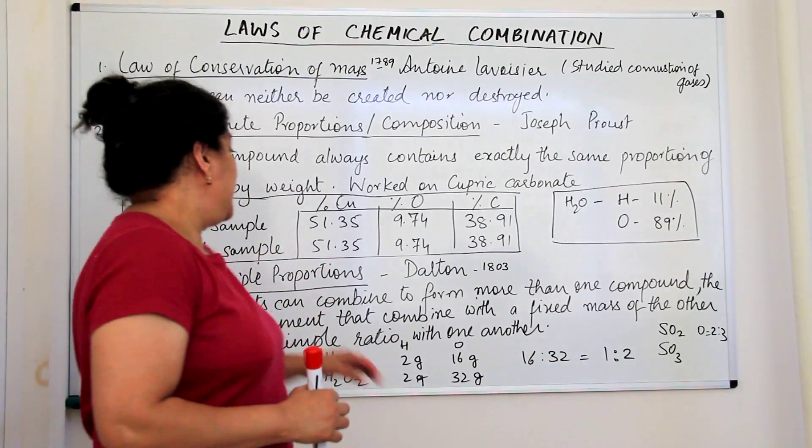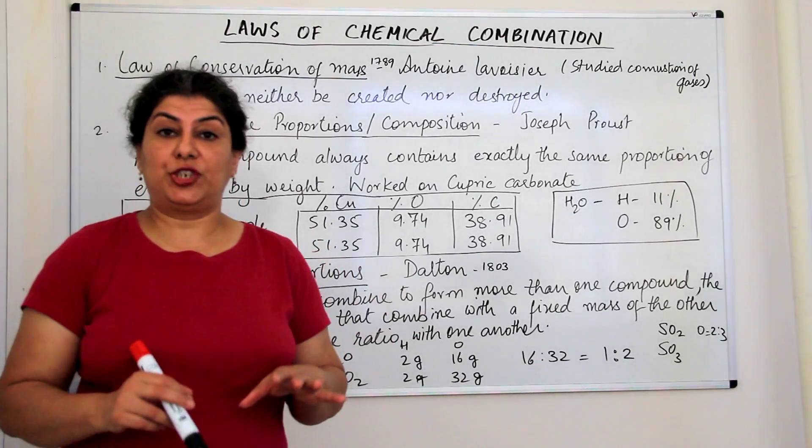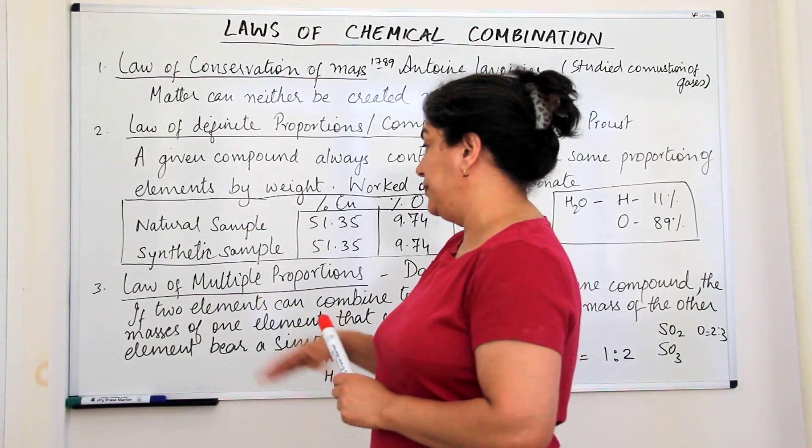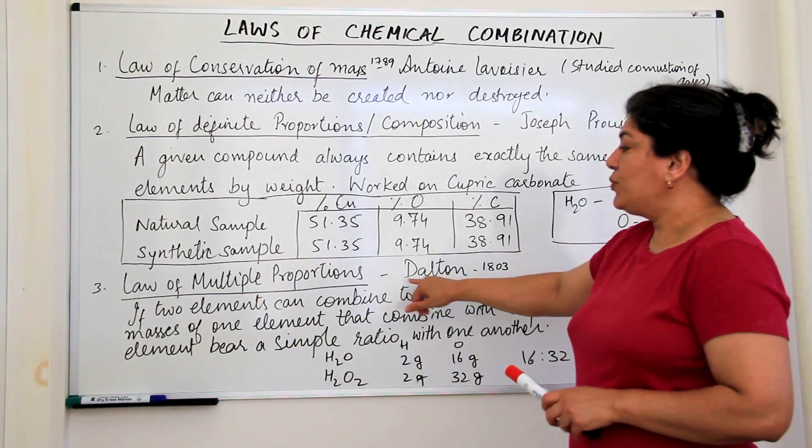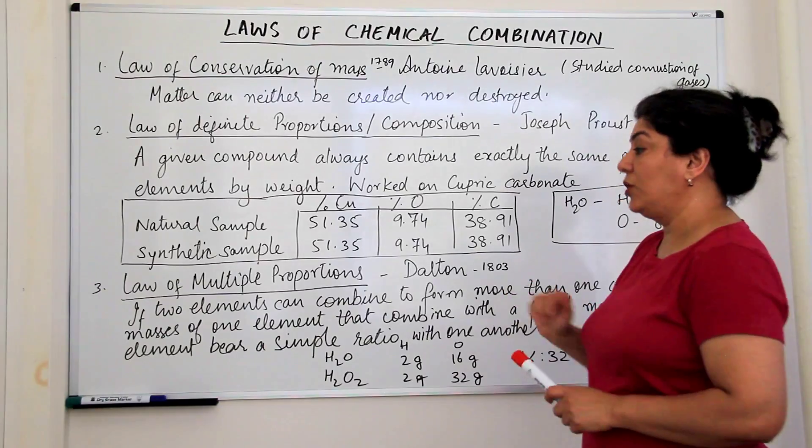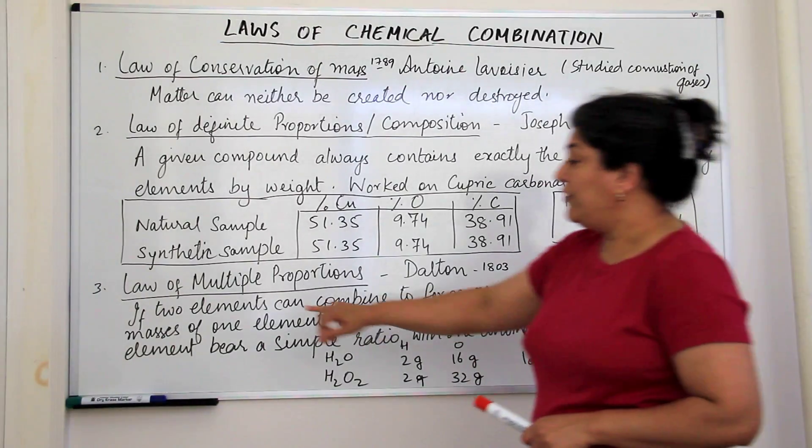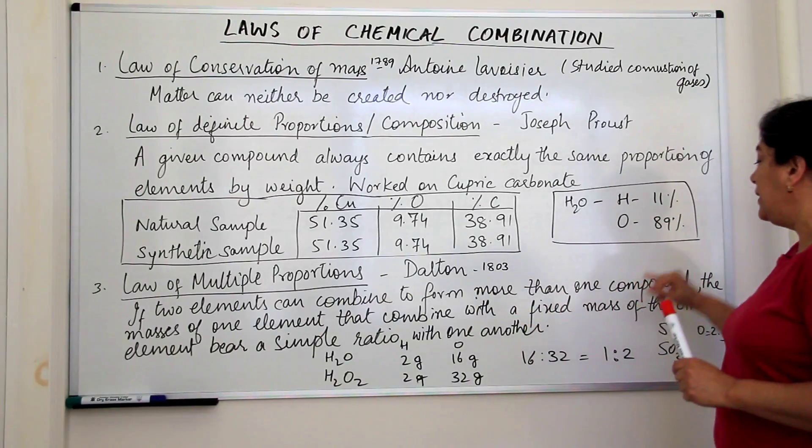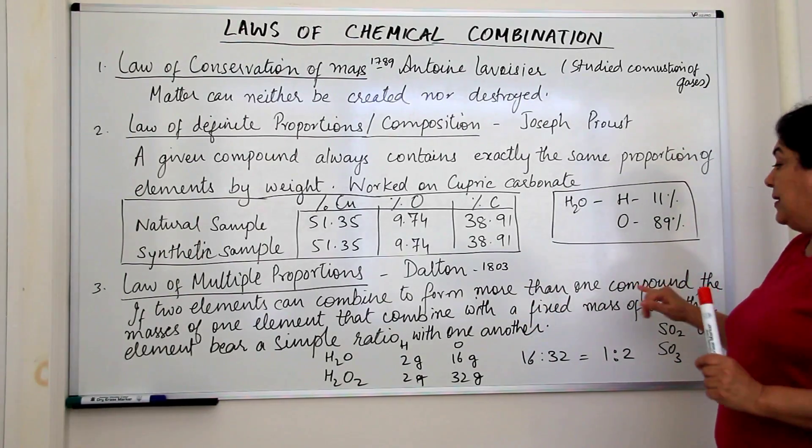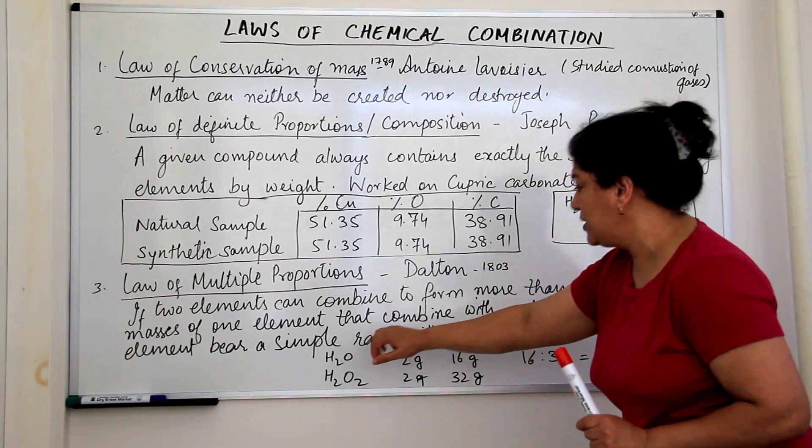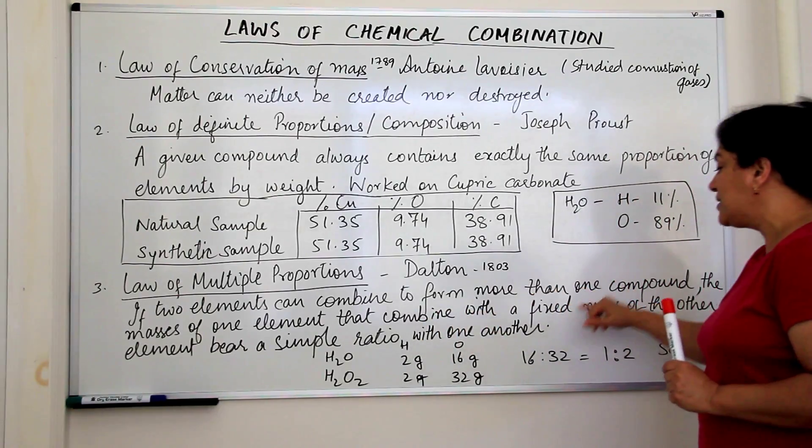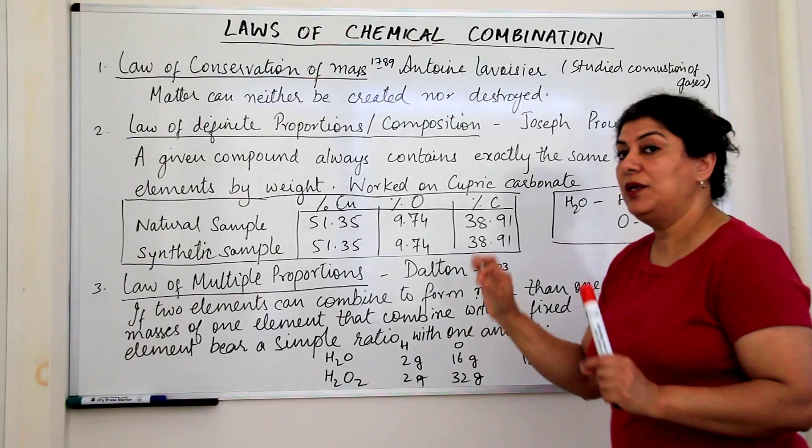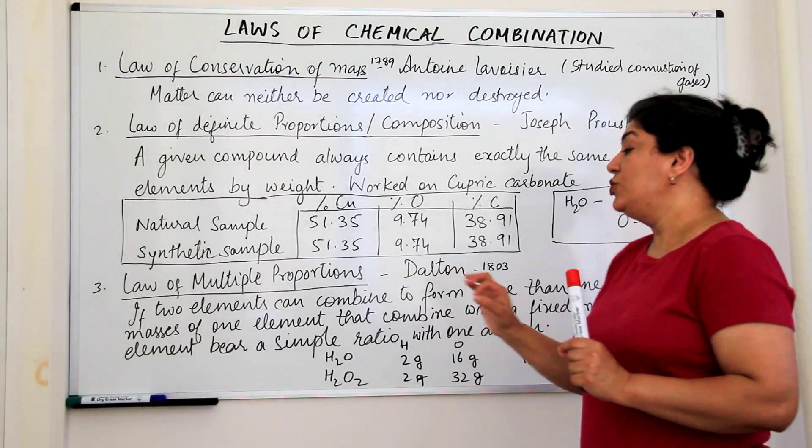The next law is the law of multiple proportions. I want you to just focus on the language of this law. This was given by Dalton in 1803. He said that if two elements can combine to form more than one compound, then the masses of one element that combine with the fixed mass of the other element bear a simple whole number ratio to each other.